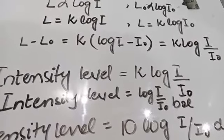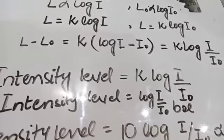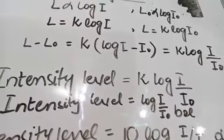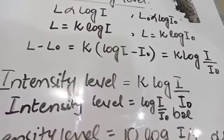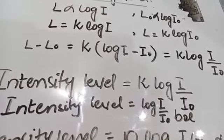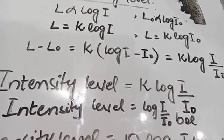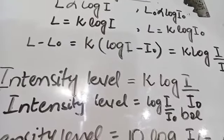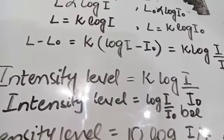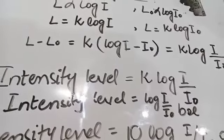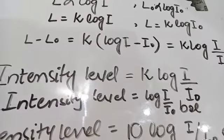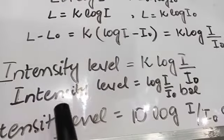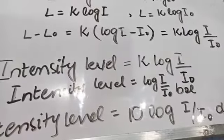The value of K depends on the units of I and I₀ and also on the unit of intensity level. If the intensity I of an unknown sound is ten times greater than I₀ of the faintest audible sound, then I = 10 I₀. If the intensity level of such a sound is taken as one unit, then K equals 1. Substituting K = 1, the relation becomes: intensity level = log (I / I₀) Bel. Bel is a large unit.